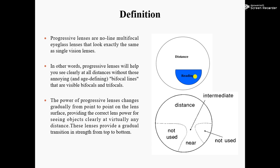Progressive lenses look like single vision lenses. In other words, progressive lenses help you see clearly at all distances without the annoying and age-defining bifocal lines that are visible in bifocals and trifocals. Patients who are not comfortable wearing bifocal lenses because of that visible line can use progressive lenses, and if you wear progressive lenses nobody can tell.